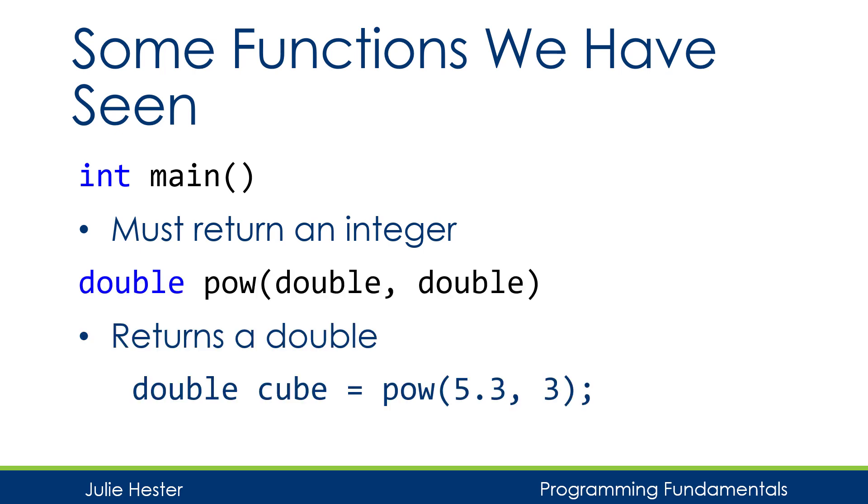Another function we've used is pow, when we want to raise a base to an exponent. The pow function has two doubles as parameters going into the function, and it returns a double. So after the function executes, we will get a new number back from the function, and then we can save that function in a variable and use it later.